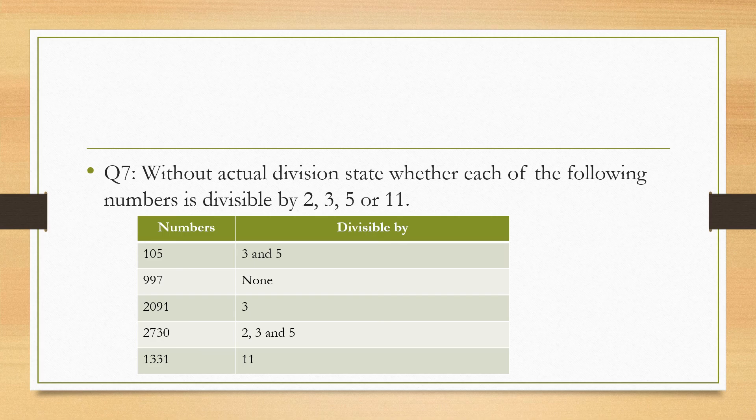This is how you are going to check whether the rest of the numbers are divisible by 2, 3, 5, or 11. You have to check these numbers by all 2, 3, 5, and 11.